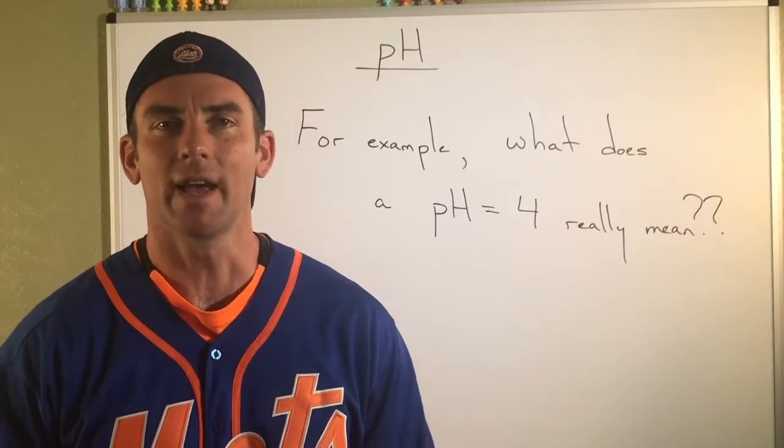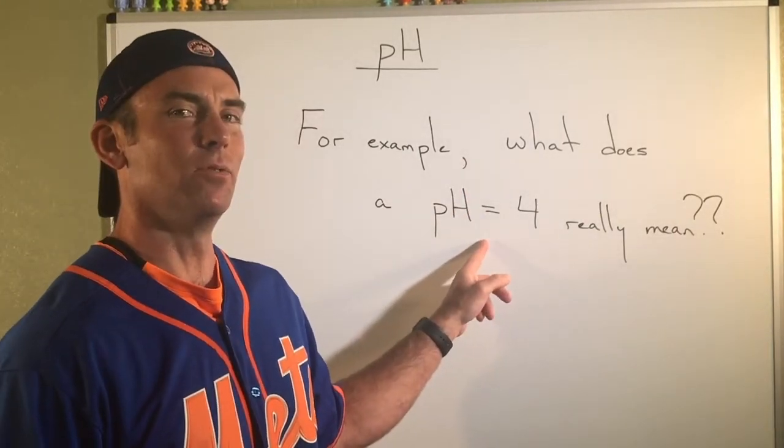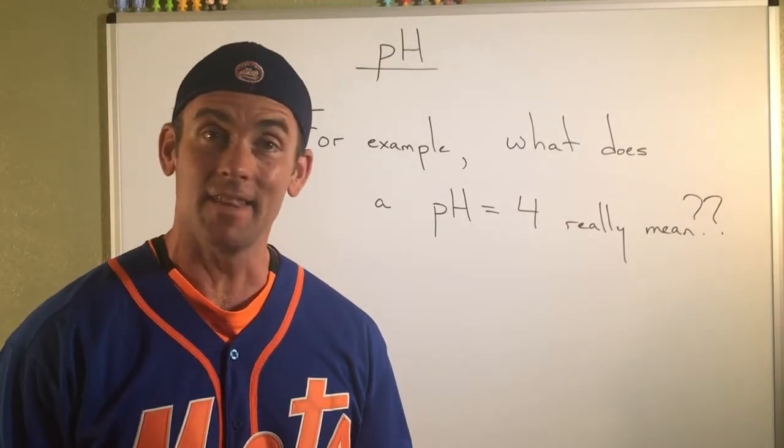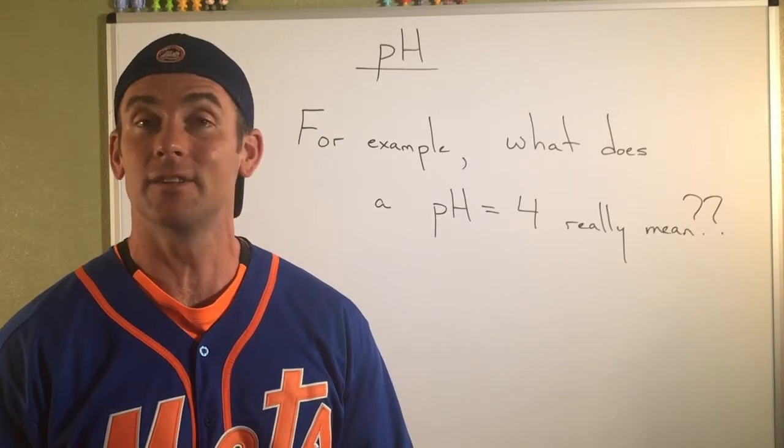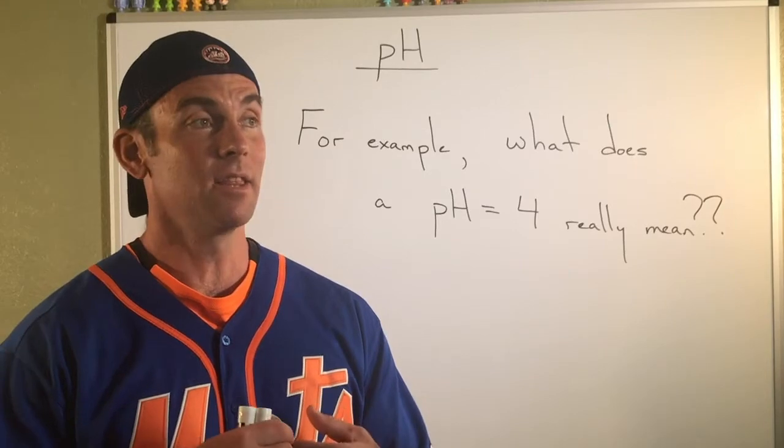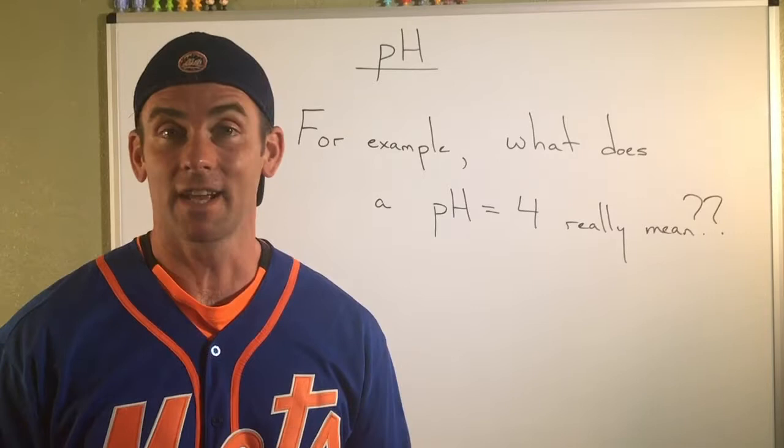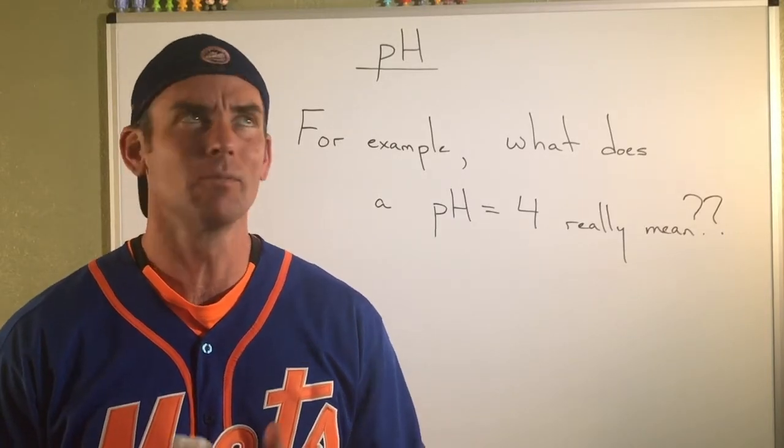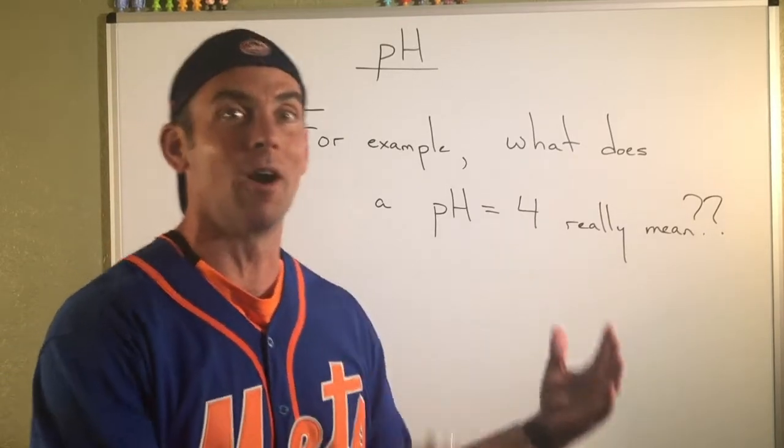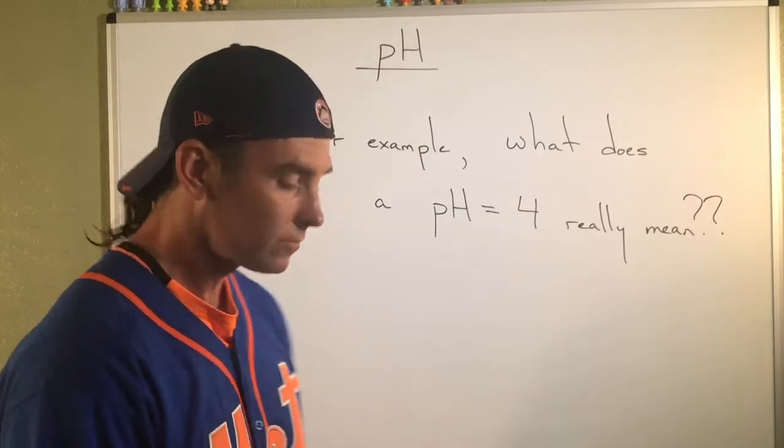So here's just an example that I picked out of a hat. What does it really mean to say that a pH of a solution is four? So first of all, you should know that since it's less than seven, that is talking about an acidic solution. Well, it turns out in an acidic solution, the concentration of H3O+ is much greater than the concentration of OH-. That's really what it means. And this is actually going to be a quantitative way of telling us how much more acidic is that solution.